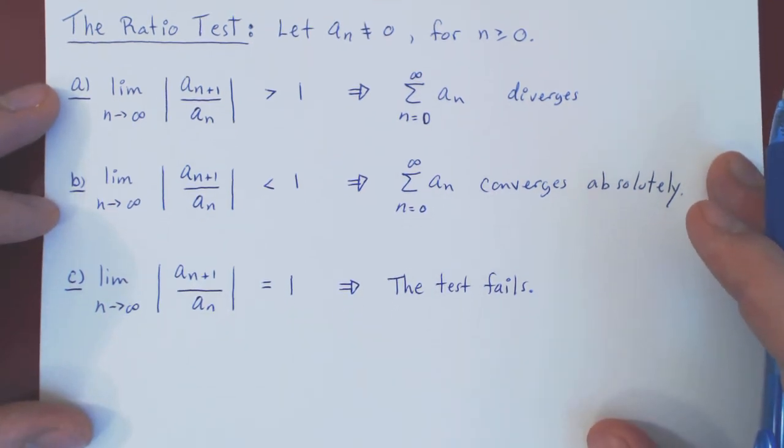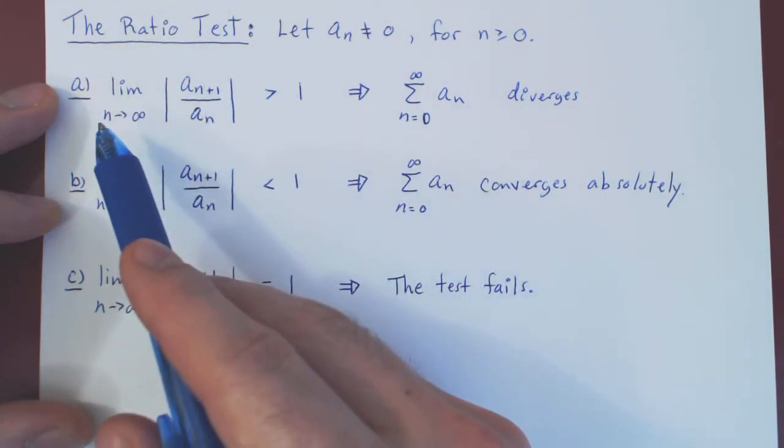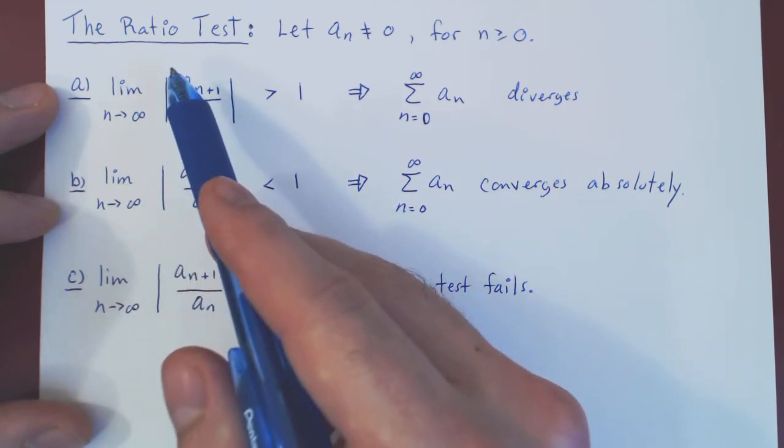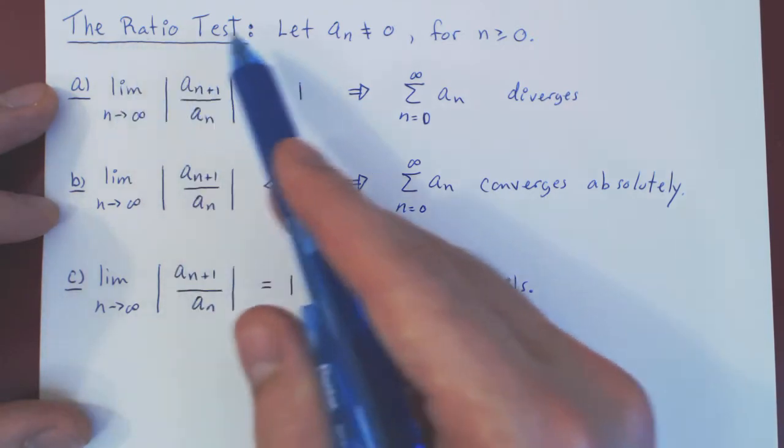So one question is—well, one simple observation: you can see why we call this the ratio test, as we look to the limit of the ratio of consecutive terms in absolute value. So it's clear why we call this the ratio test.